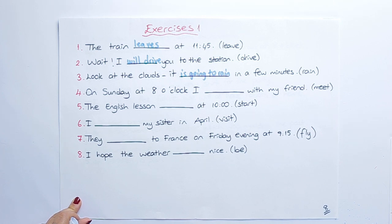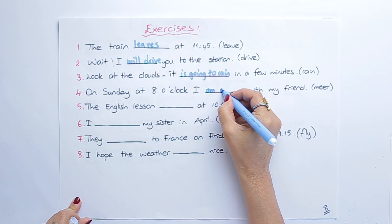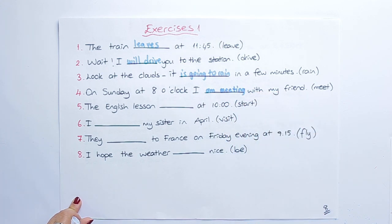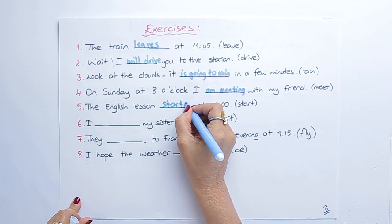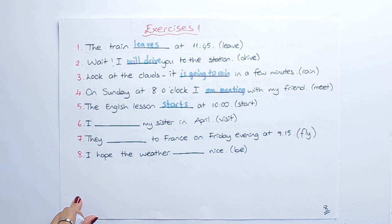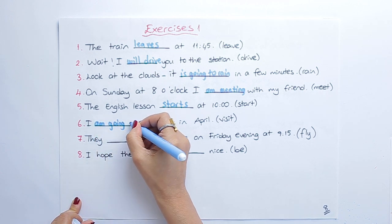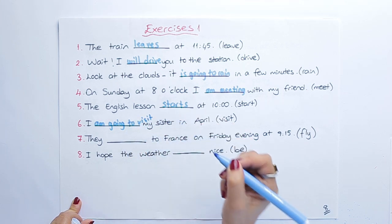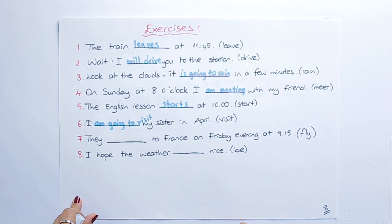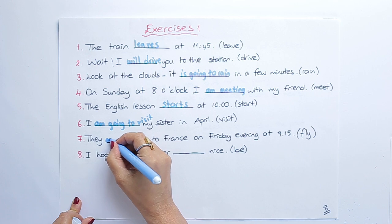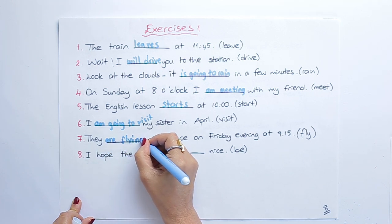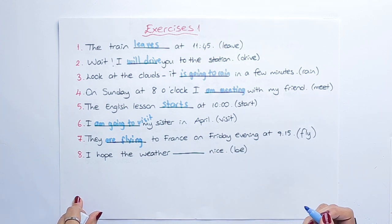On Sunday at 8 o'clock, I am meeting with my friend. The English lesson starts at 10. I am going to visit my sister in April. They are flying to France on Friday evening at 9.15.